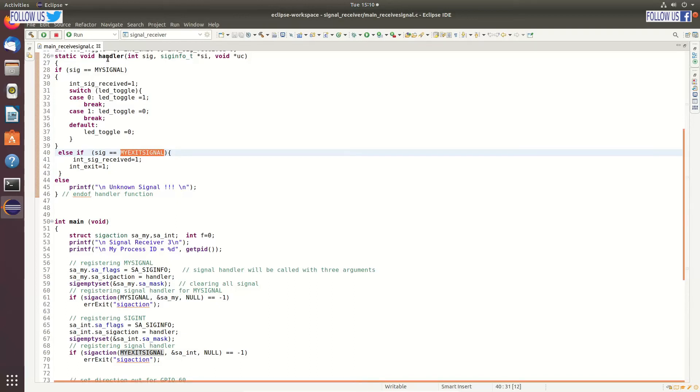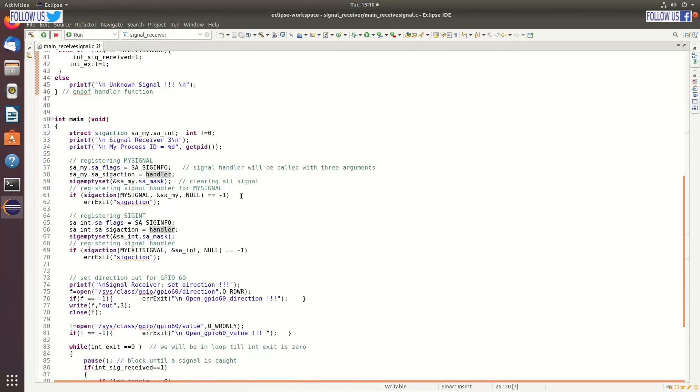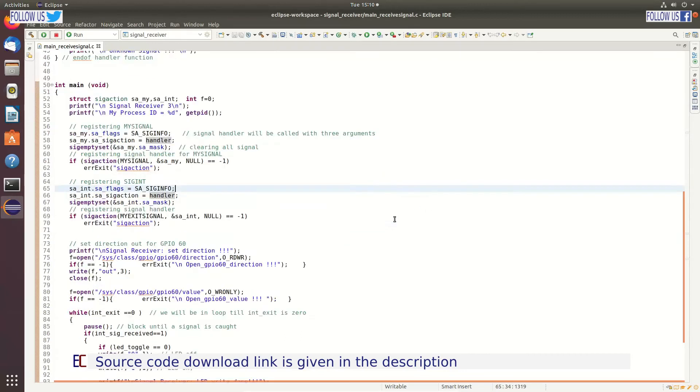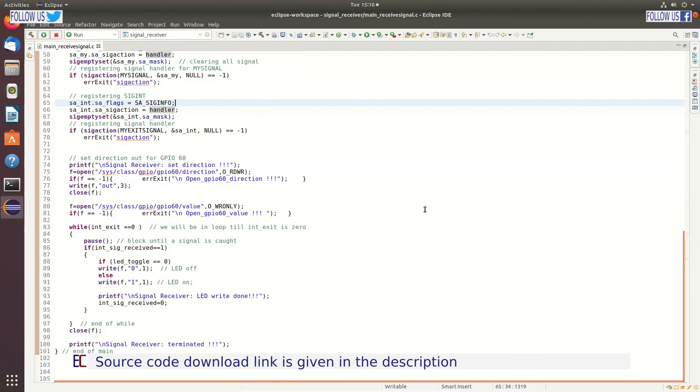Because my signal handler is same for both signals, we are calling sigaction API two times. During the first call of sigaction, we are registering my signal. In the second call we are registering my exit signal. So the same handler will be called when we receive any of these two signals. Now we have to write LED toggling code. Remaining code in this file is for LED toggling. Because we have already discussed LED toggling code, let us skip this here and move forward.